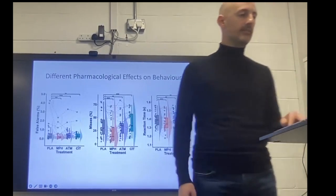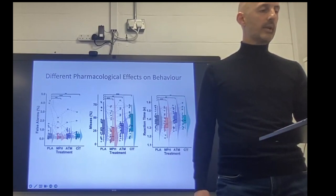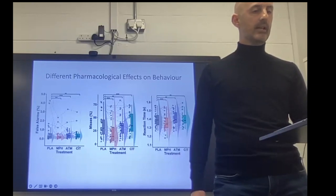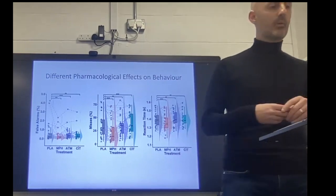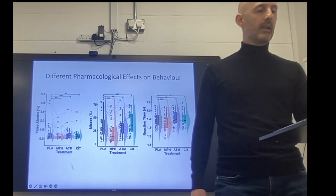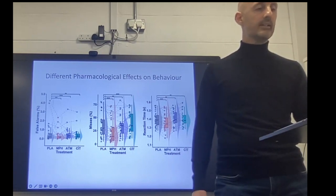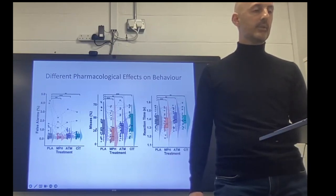Looking at the behavioral effects: as we anticipated, methylphenidate improved performance across the board — it reduced false alarms, reduced lapses of attention or misses, and sped up reaction times. Atomoxetine had a stimulant effect, but not a particularly helpful one: it actually increased false alarms relative to placebo, making participants a little more impulsive. Finally, citalopram, which increases serotonin and has an arousal-reducing effect, had the predicted effect of increasing lapses of attention — more misses relative to placebo.